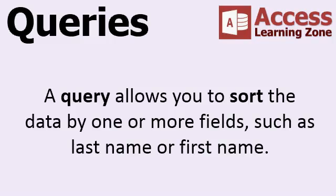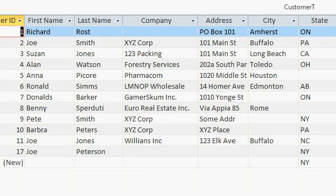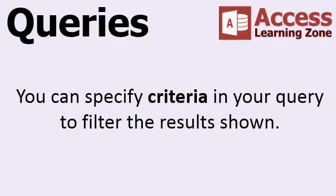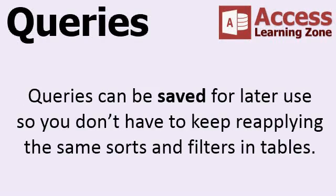So one of the things you can use a query for is to sort the data by one or more fields, such as last name and first name. Also, you may not want to see all of these records. What if you only want to see customers from New York? You can specify criteria in your query to filter the results shown. Queries can be saved for later use so you don't have to keep reapplying the same sorts and filters directly in your tables.